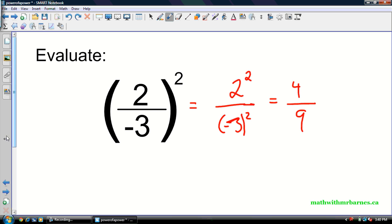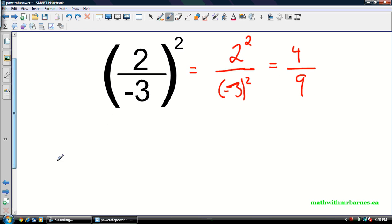But again, if you're ever stuck and you're not sure what to do, just write it out as your repeated multiplication. So you could write this one out as negative 2 over 3 times negative 2 over 3. And just go ahead and multiply it across the top. Multiply it across the bottom just like you were doing. Negative 2 times negative 2 is 4. 3 times 3 is 9. Done. But essentially we're doing that anyway.